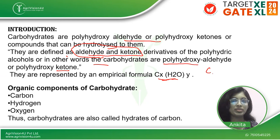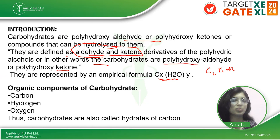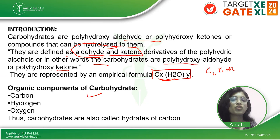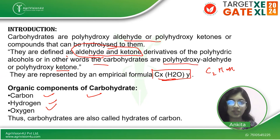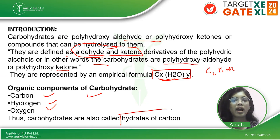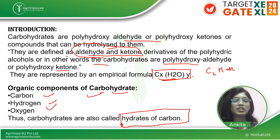In the formula CxH2Oy, x is the number of carbon atoms and y represents how many H2O groups are present. The three important elements present in carbohydrates are carbon, hydrogen, and oxygen. Thus carbohydrates are also called hydrates of carbon. Now let's see the classification.